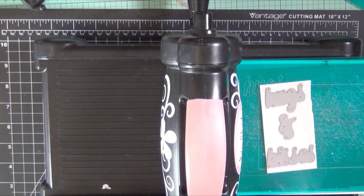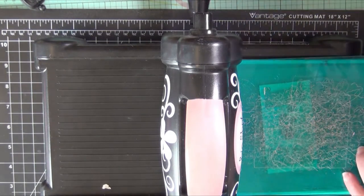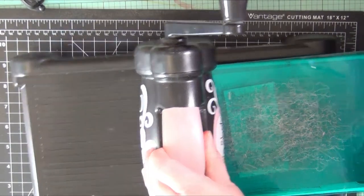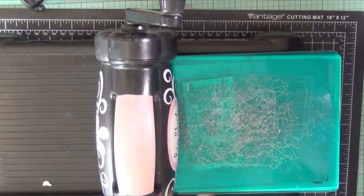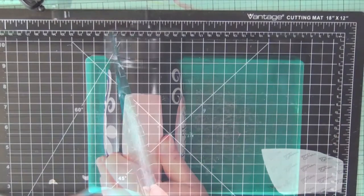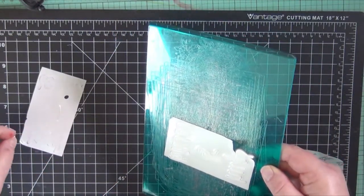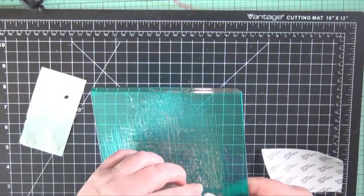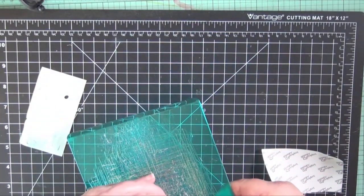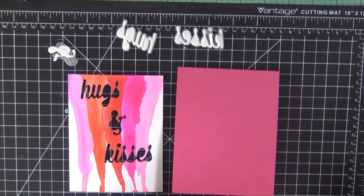When you have everything set up you're going to run it again through the big shot and I'm going to say warning, warning Will Robinson. Did you see what I did not do? I did not put that extra adhesive back on top and everything stuck to my plate. So at home don't do what I did. Put that paper back over top so it does not get stuck.